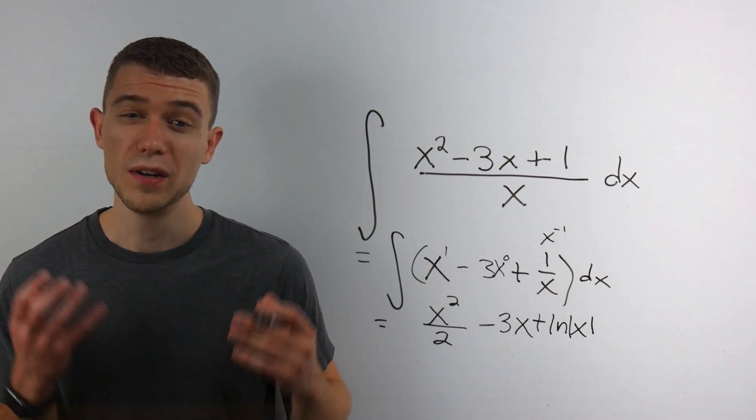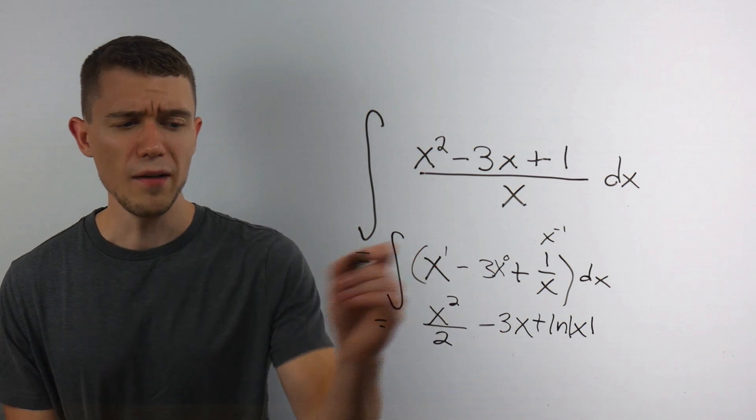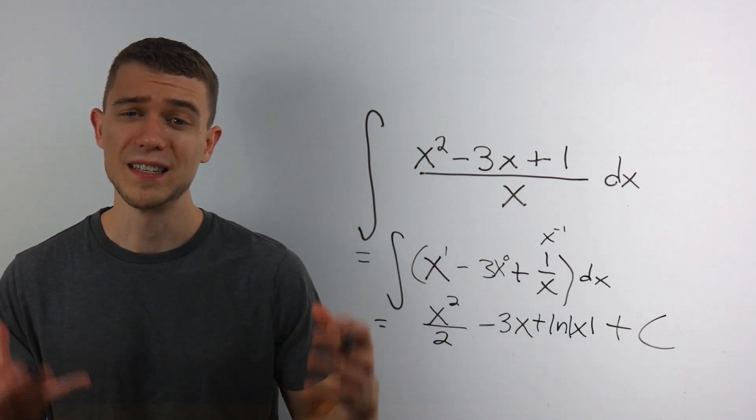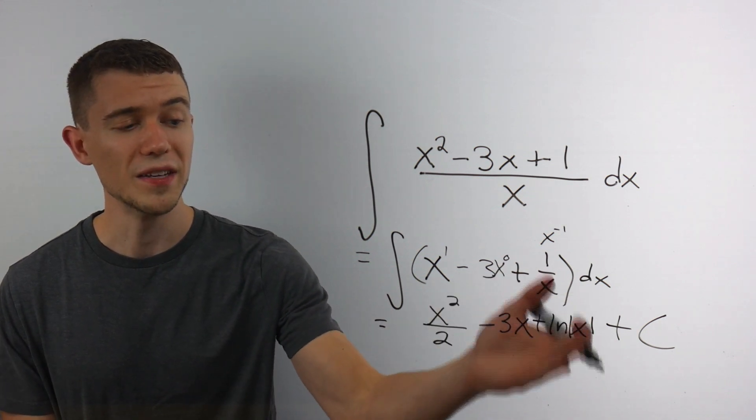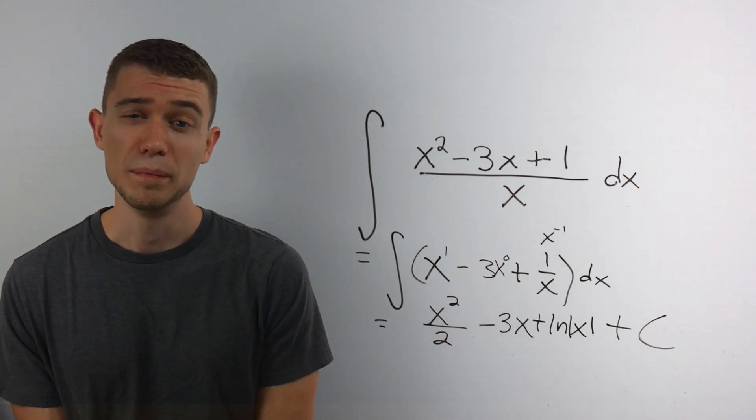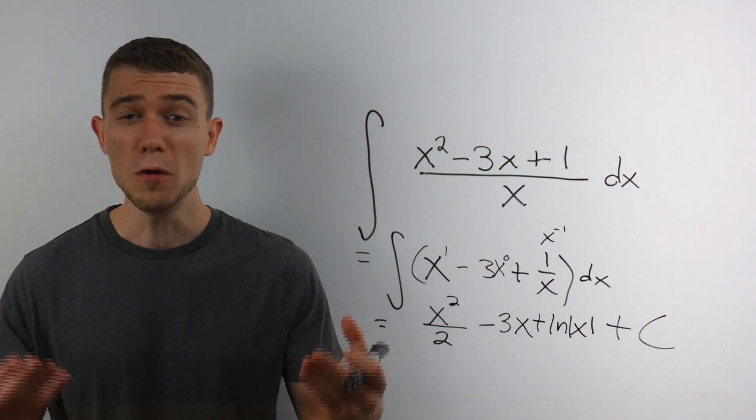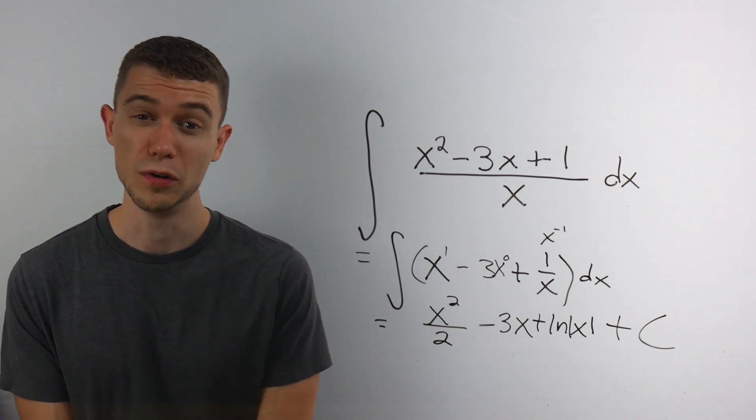Whenever we do anti-derivatives, indefinite integrals, every good indefinite integral deserves plus C at the end, plus a constant, because when we take the derivative of this thing, the constant being derived would go to 0. That's how we solved this problem. I hope you got something out of it, and I hope you're having a really good day.